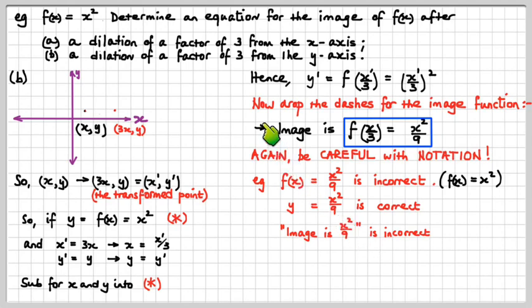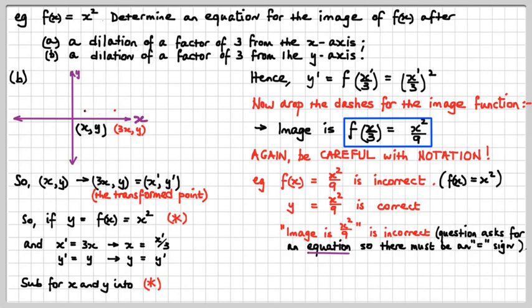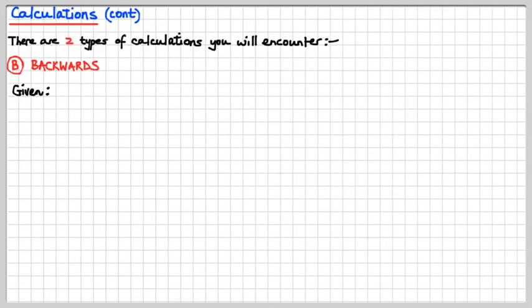One more trap: if the original question asked for an equation, you must have an equal sign in your answer. Even if what you've written is logically correct, if there's no equal sign, it's not an equation and it's wrong. The question asked for an equation, so you must include an equal sign.